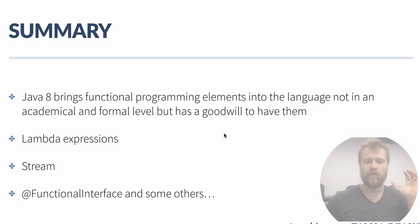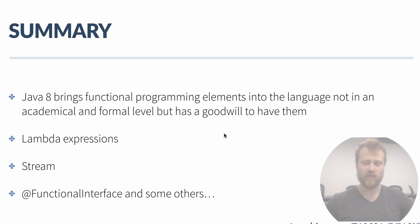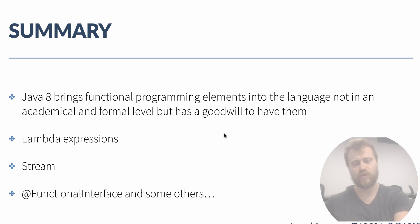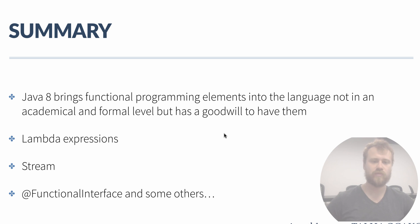To summarize: Java 8 brings functional programming into the language, not in a purely academic manner, but there is good intent — they are trying to transform the language toward functional programming without applying all its rules, because Java is still object-oriented at heart. The important concepts coming with Java 8 are lambda expressions, streams, and functional interfaces. In the next video we'll talk about functional interfaces.